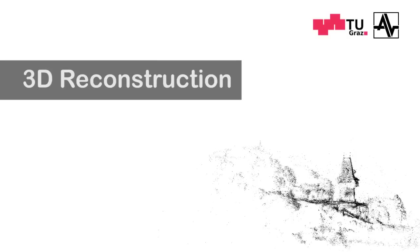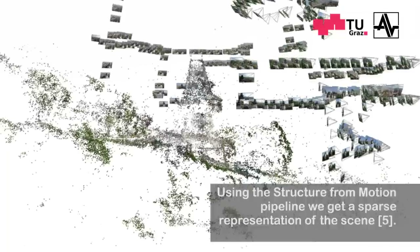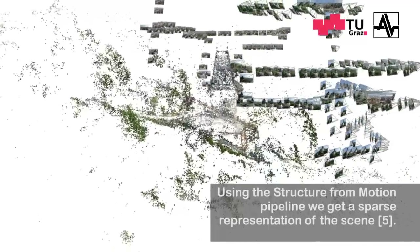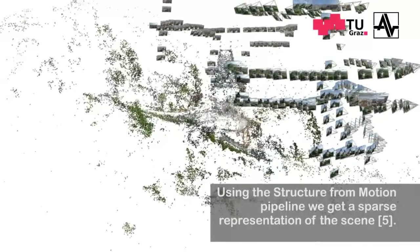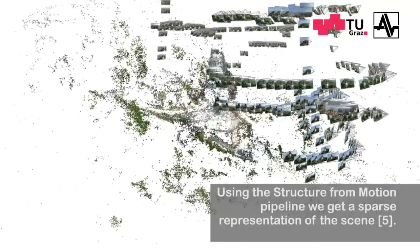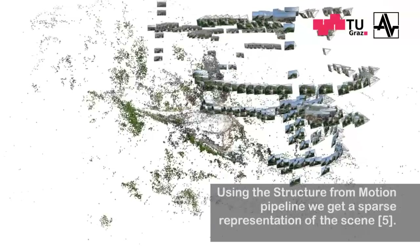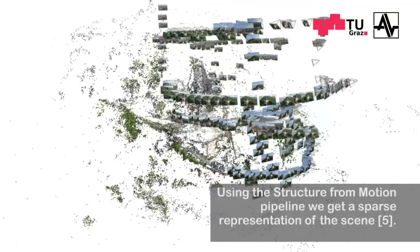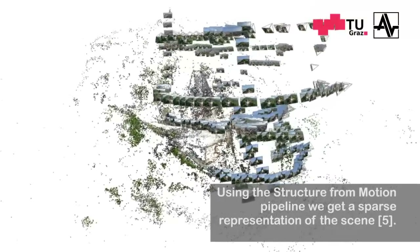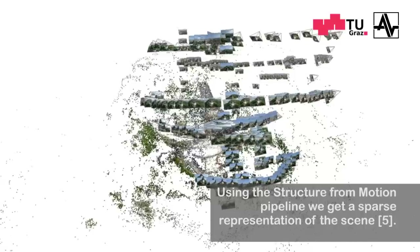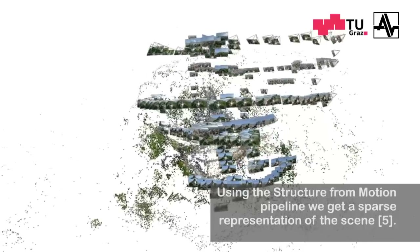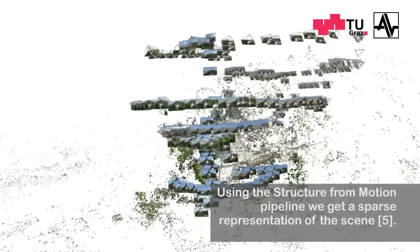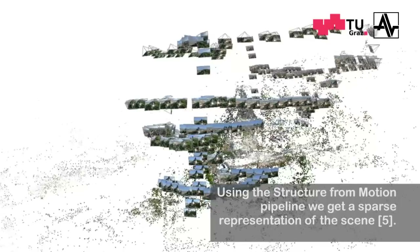The 3D reconstruction is generated using Structure from Motion. Features are extracted and matched across images to determine camera orientations and reconstructed feature points. Once an initial camera pose is found, aerial triangulation bundle adjustment is applied to simultaneously refine camera poses and 3D positions of the reconstructed sparse feature points.